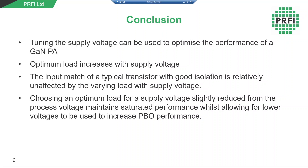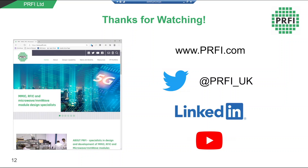In this short video we have shown how tuning of the supply voltage can be used to optimize the performance of a GaN PA. We have shown how the optimum load changes with drain voltage and therefore why the supply voltage should be considered early in the design process. We have also shown that with a typical transistor with good reverse isolation, the input match is relatively unaffected by the varying load with supply voltage. With the example of a MMIC PA, designing with an optimum load at 26 volts on a 28 volt process gives both good output power and efficiency at 3 dB compression, and by reducing the supply voltage, good performance at power backoff.